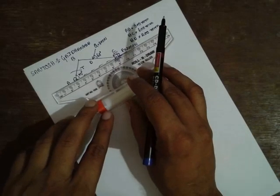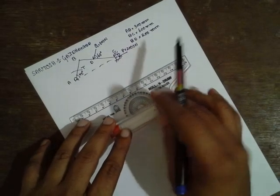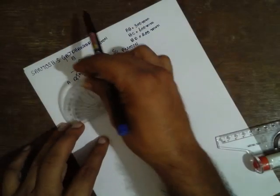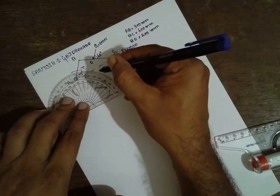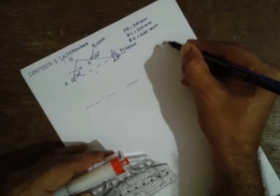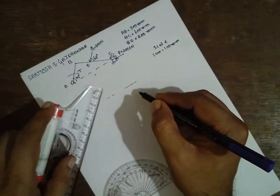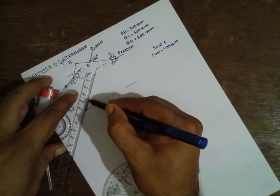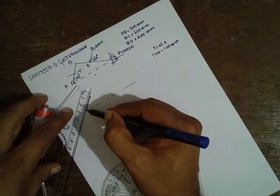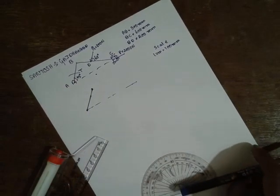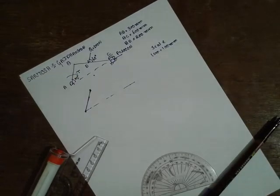First take a reference. AB is 45 degrees. AB is 300, that means scale 1 cm is equal to 100 mm. 3 cm. Now this is 600 cm, that is 6 cm.